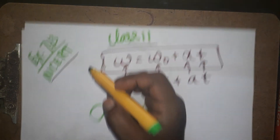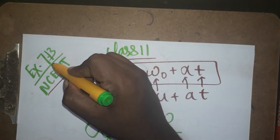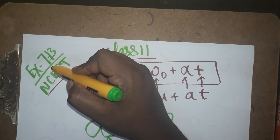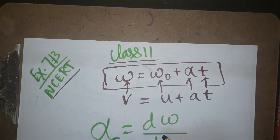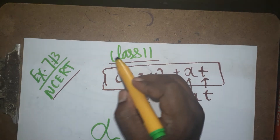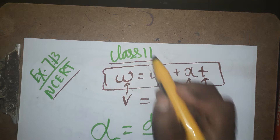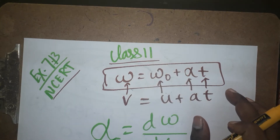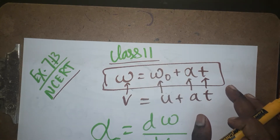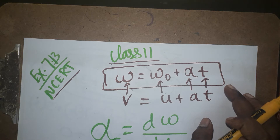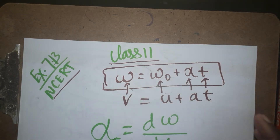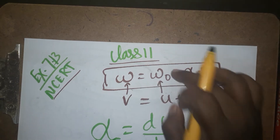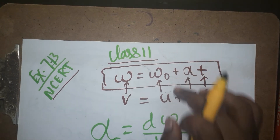Hello students, today we are going to see a Class 11 NCERT example problem — Chapter 7, Problem 13. If you want all the example problems, you can see my playlist where I have given all problems chapter-wise. This problem asks us to prove the first equation of motion using the calculus method. Omega equals omega naught plus alpha t, which is equivalent to v equals u plus at in linear motion — this is the equation we are going to prove.